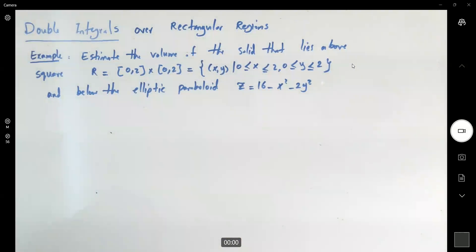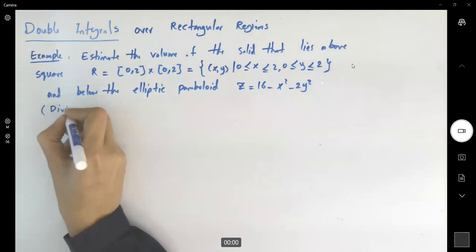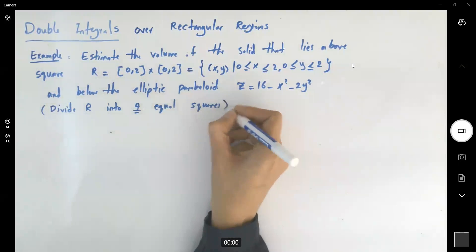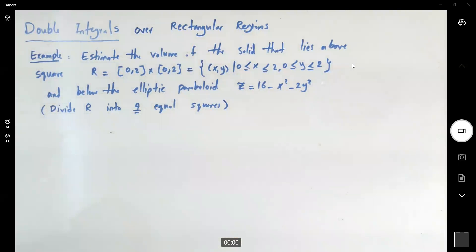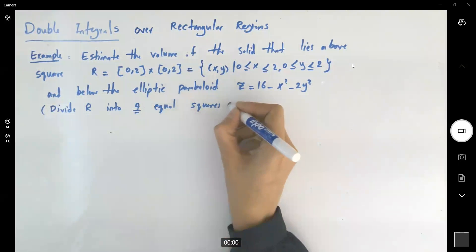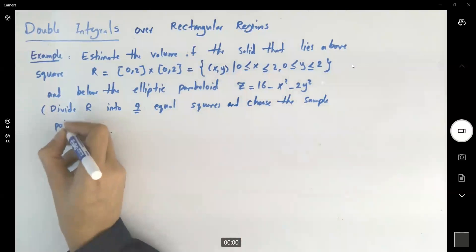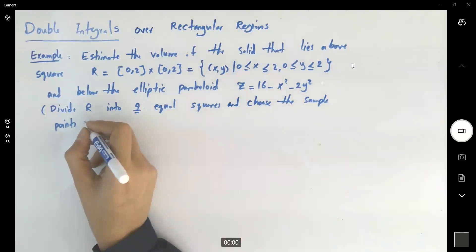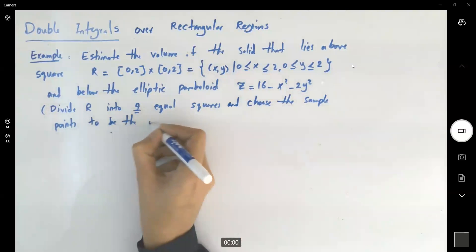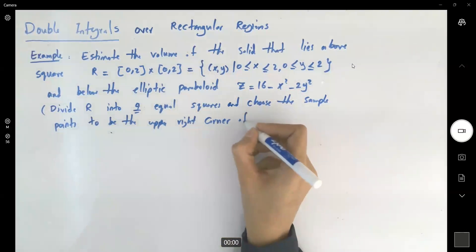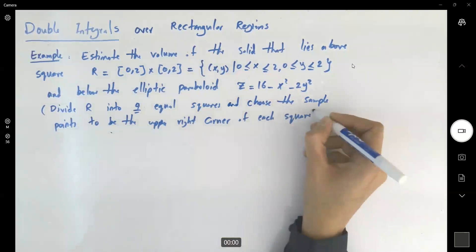And the question says, divide R into four equal squares. So this is the note that we have on this question. Divide R into four equal squares. It also says that choose the sample point to be the upper right corner, of each square, a lot of information are given to us.